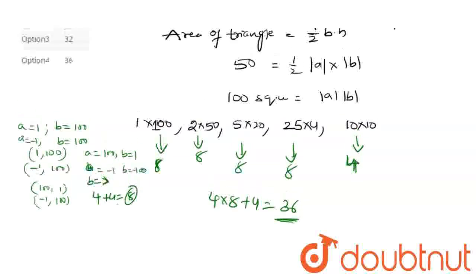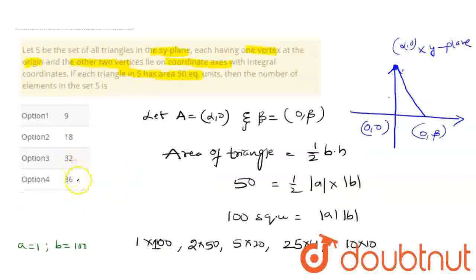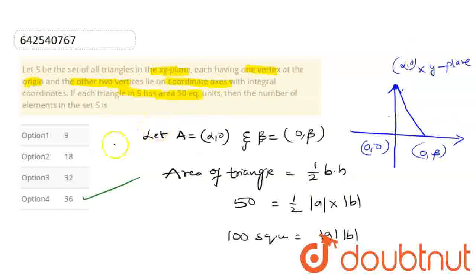After solving this question, we can see option 4 is the right option. After solving this question, the number of elements in the set S is 36. That's it. Thank you.